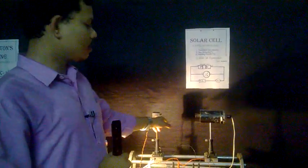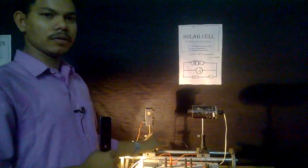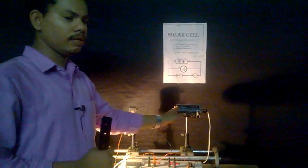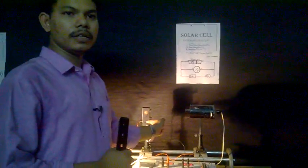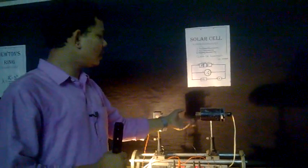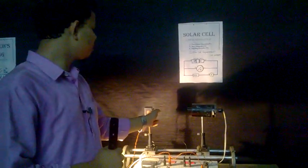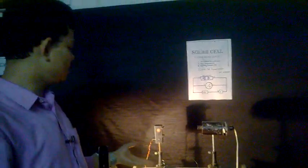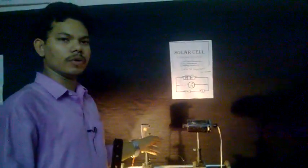There is a solar cell. If we illuminate light falling on it and we are changing the intensity of light, then there should be current changing and corresponding voltage changing.